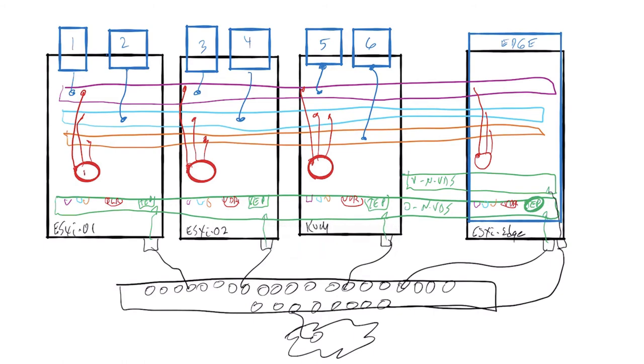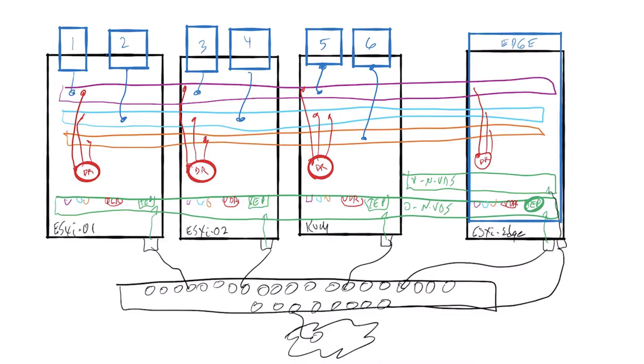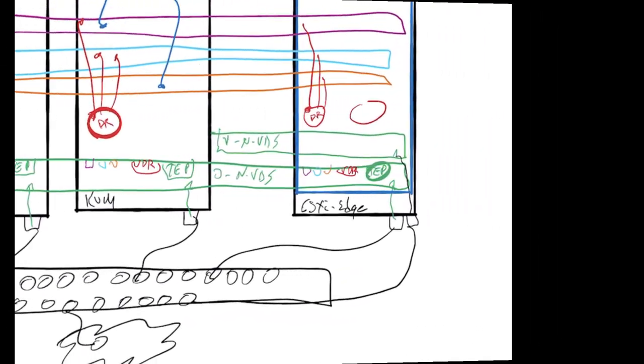Now, this guy is called a distributed router component, a DR component. And I don't care whether that is a tier 0 or a tier 1. That's the DR component. If I created this object in a single tier environment, this would be a tier 0 gateway, and I would also have an SR for that tier 0.